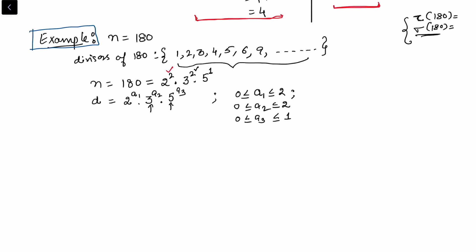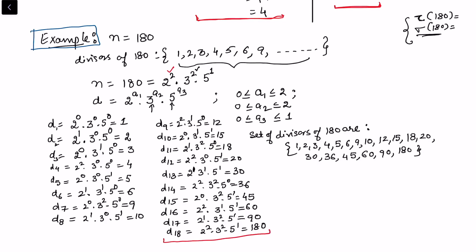Taking different choices of exponents gives all divisors. For example, (a1,a2,a3)=(0,0,0) gives 1; (1,0,0) gives 2; (0,1,0) gives 3; and so on. There are 18 such divisors, giving us the full divisor set of 180. This implies tau(180) = 18 just by counting all possible combinations.